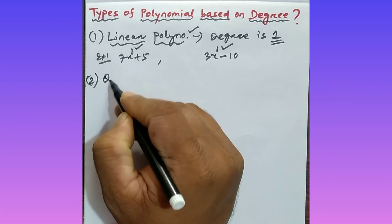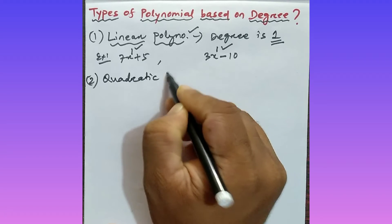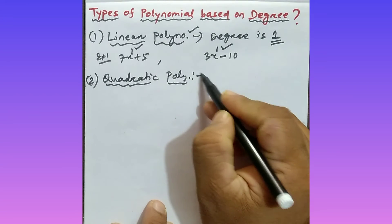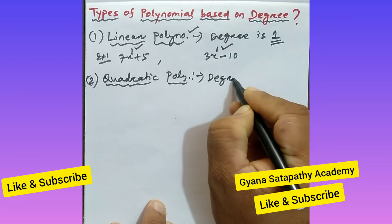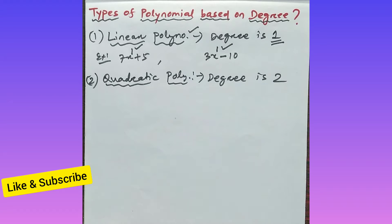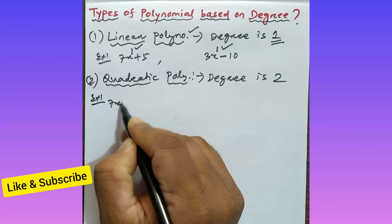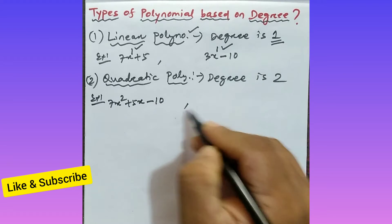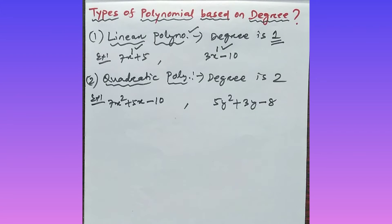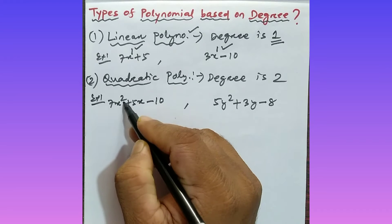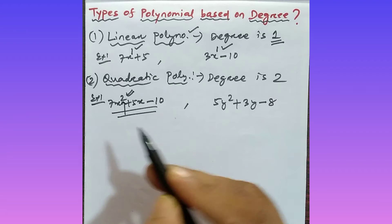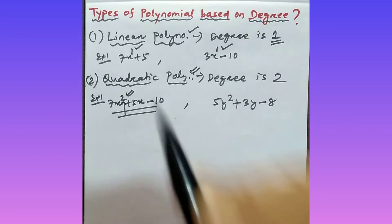Next, there is quadratic polynomial. What is the meaning of quadratic polynomial? A polynomial whose degree is 2 — that is called as quadratic polynomial. For example: 7x squared plus 5x minus 10. In this polynomial, the highest power of the variable is 2, so the degree is 2. As the degree is 2, this polynomial is called as quadratic polynomial.